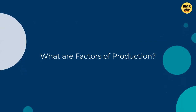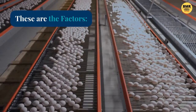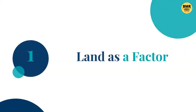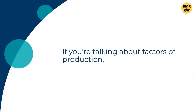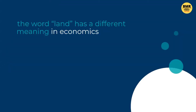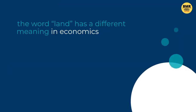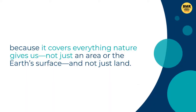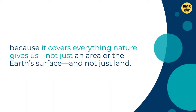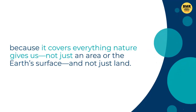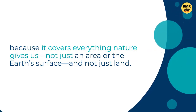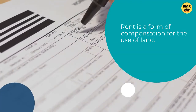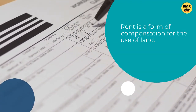What are the factors of production? There are four factors. Number one: land as a factor. If you are talking about factors of production, the word land has a different meaning in economics because it covers everything nature gives us — not just an area or the earth's surface. Rent is a form of compensation for the use of land.